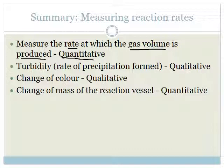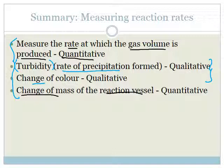Looking at the change of mass of the reaction vessel is also quantitative because we can measure exactly the number of grams that the mass has changed by. Then we have turbidity and color change, which are qualitative. Qualitative is when you have to use your judgment as to when exactly the color changes, or when you can no longer see an X because so much precipitation has formed. These are the four ways that you can measure reaction rates — there are other ways, but these are the four you need to know for this year.